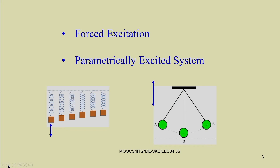In case of forced excitation, we have a spring-mass system where longitudinal vibration occurs under applied force. Similarly, a pendulum is a forced excited system, but if the platform moves up and down, we get an equation similar to the Mathieu-Hill type — these are known as parametrically excited systems. In forced excitation, force and displacement are in the same direction, whereas in parametrically excited systems, the force application and direction of motion are perpendicular or orthogonal to each other.